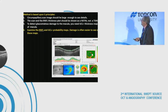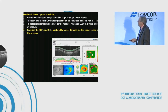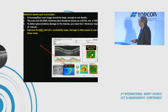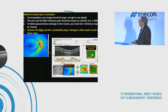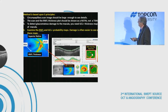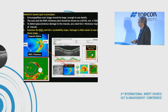We do the same for the retinal nerve fiber layer — taking the thickness map and turning it into a probability map. The map is flipped so inferior retina is correctly oriented, showing you where the significant thinning is: 0.1% versus within normal limits.